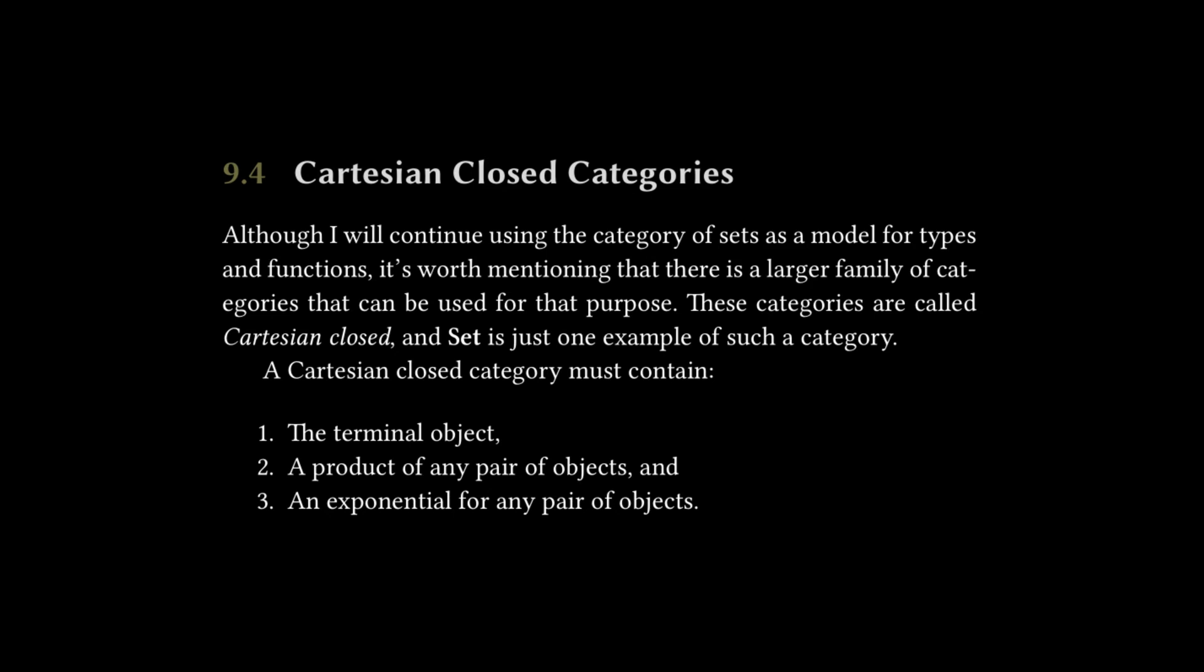A Cartesian closed category must contain one, the terminal object, two, a product of any pair of objects, and three, an exponential for any pair of objects. So great to get that definition of a Cartesian closed category.